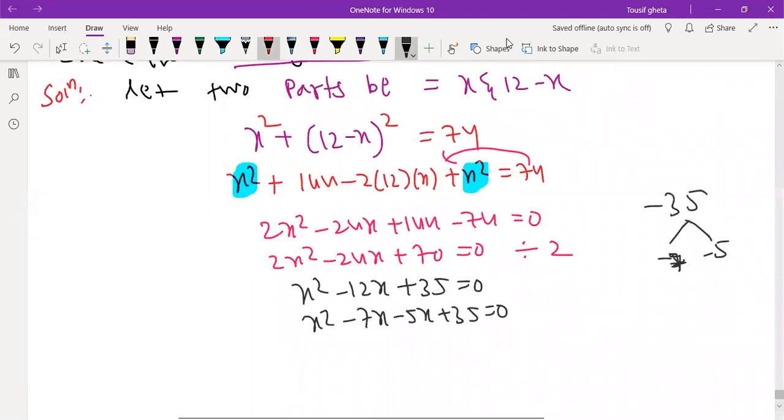So take common now. x common will get x minus 7. Minus 5 common x minus 7. Right answer Shreeta. Very good.